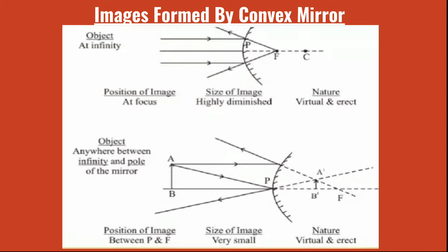The second condition is if the object is placed anywhere between infinity and the pole of the mirror. The image is formed between the pole and the focus. The size of the image is small. In the first case the image was highly diminished, while in this second condition the image size is slightly bigger, but still very small. In both conditions the nature of the image is virtual and erect.